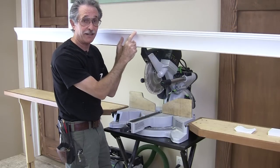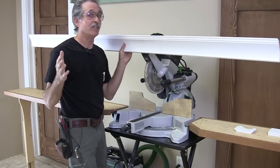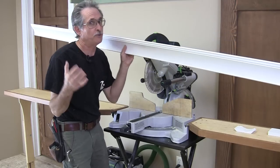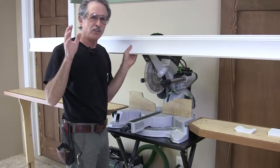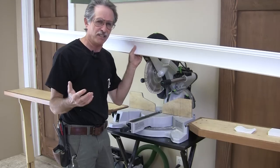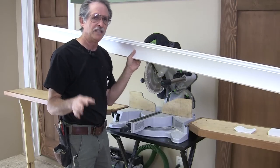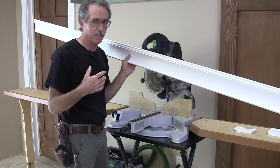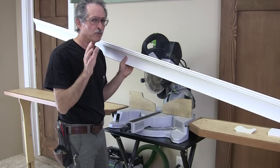We're going to cut this crown upside down. Now you hear a lot of carpenters say whenever you cut crown you always cut it upside down and backwards. But hardly anybody knows what upside down and backwards really means. So I'd rather have carpenters that come to work for me think about this in a different way.